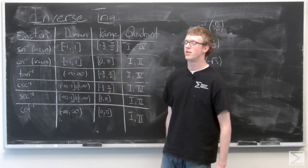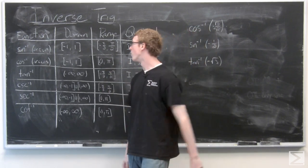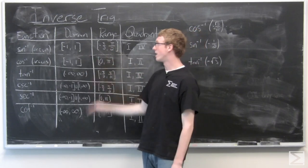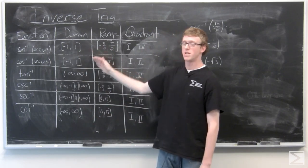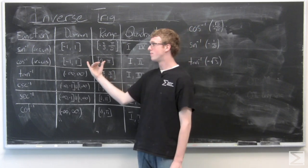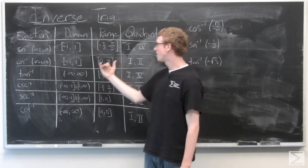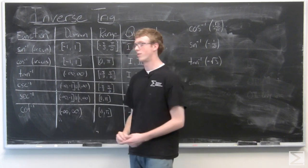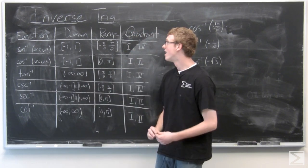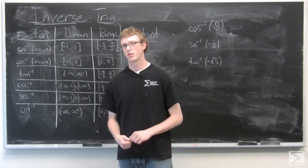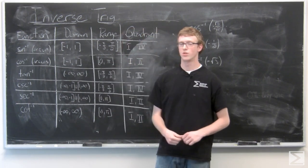So what we've done here is drawn out the table where the inverse functions exist and their range. Basically all this is is flipped between the domain and range of the normal trig functions so that the inverse trig functions pass the horizontal line test. In order for a normal trig function to pass the horizontal line test, you do have to restrict the domain.